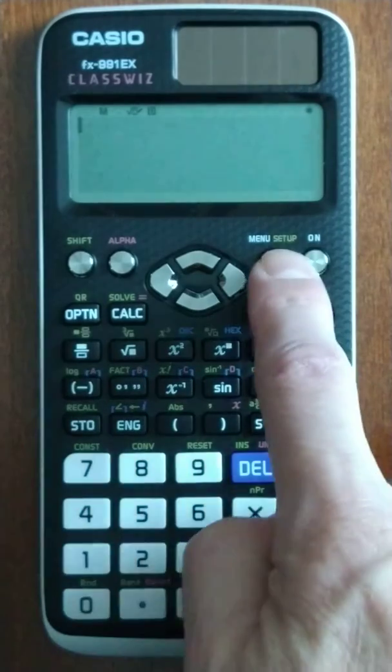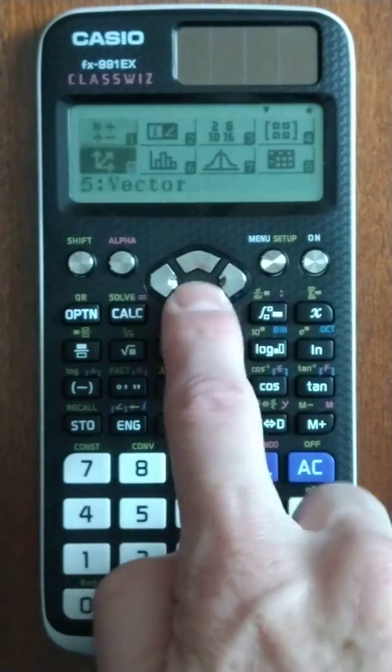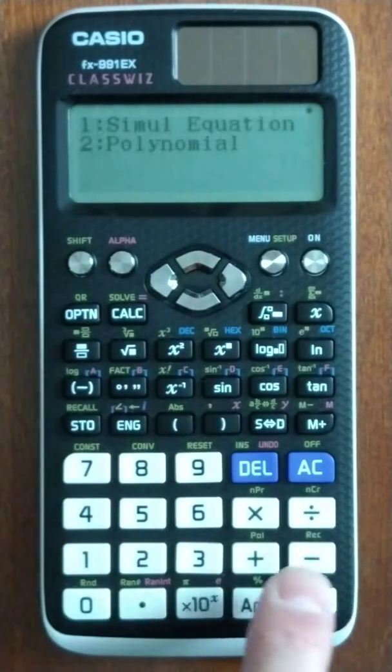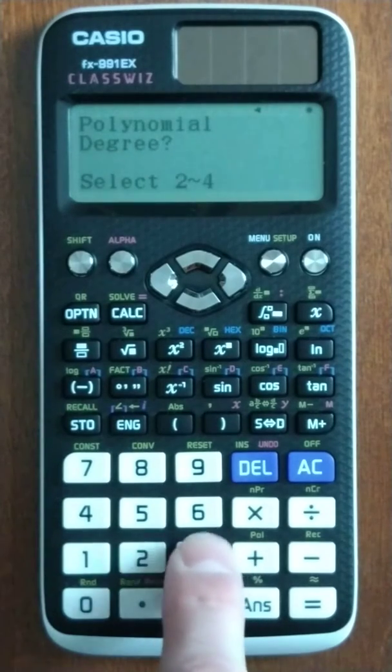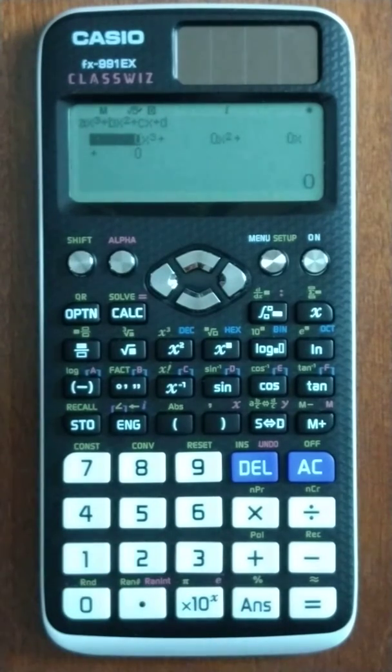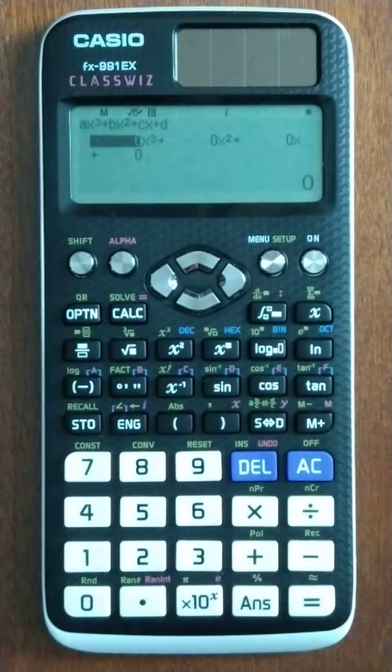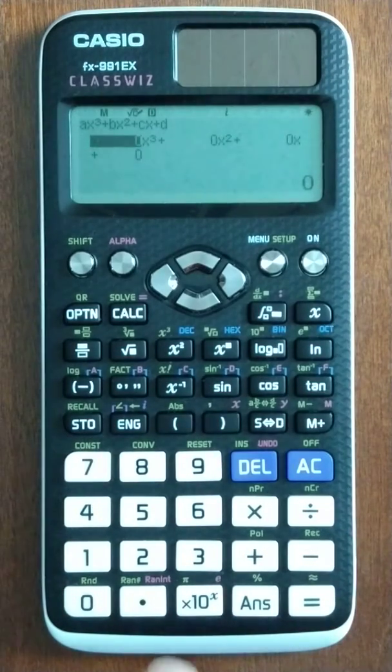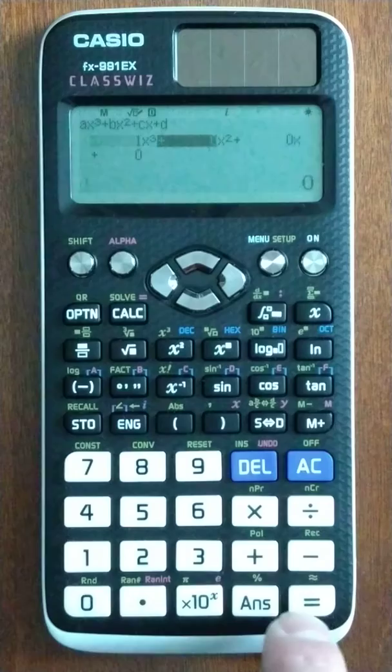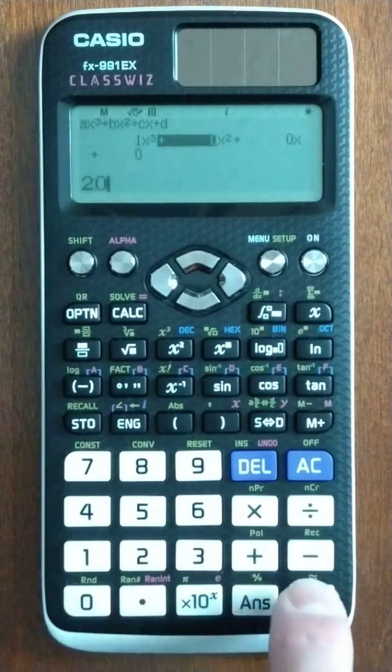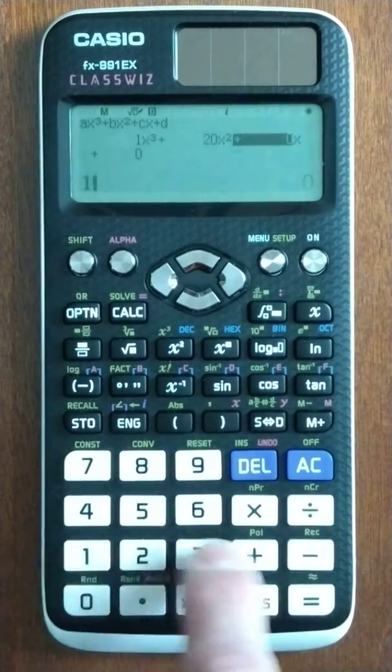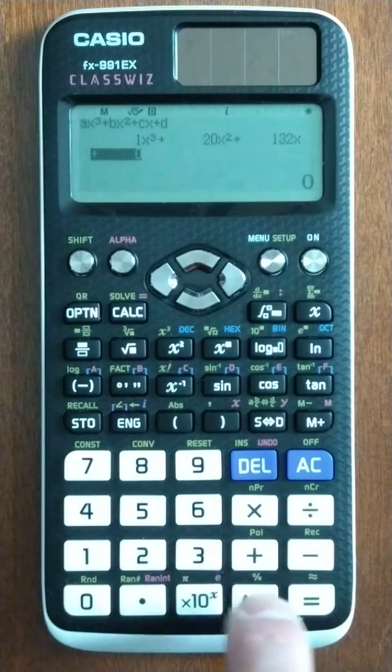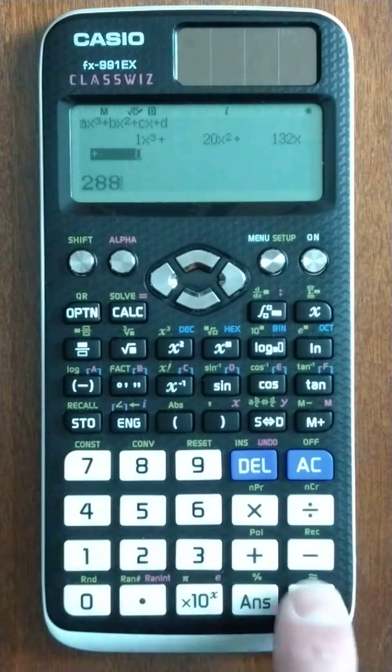So again, we're going to go into menu, down, down, over. This time we're doing a polynomial of the third degree. So we go in there, and we're going to put in our coefficients of 1 x cubed, 20x squared, 132x, 284 constant.